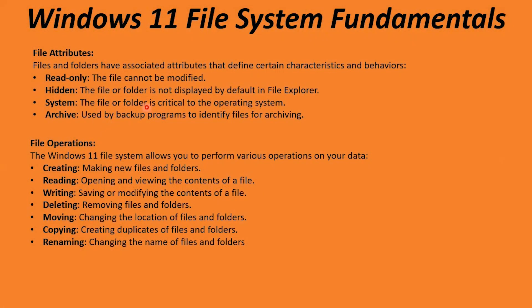System files are critical to the operating system — you don't want to modify those. Archive files have an archive bit that tells your backup program the file has been modified since the last backup and is ready to be backed up again. Common file operations include creating a new file or folder, reading by opening and viewing its contents, writing by making changes and saving, deleting files and folders, moving them from one location to another, copying to make a duplicate, and renaming.